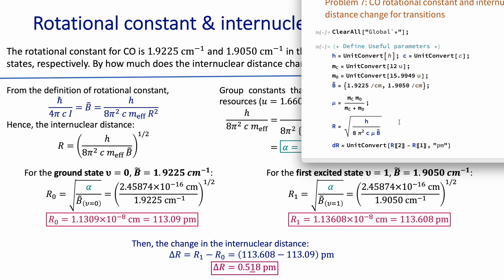I'm defining the internuclear distance in the same way as before, but first let me define the effective mass. With that I have everything needed. Here I'm calculating r, but remember this is an array containing two values — the distances corresponding to each one of those rotational constants.